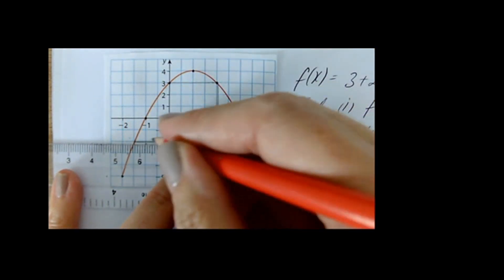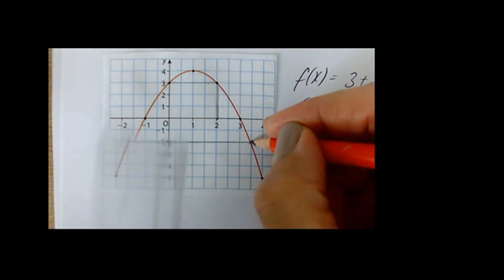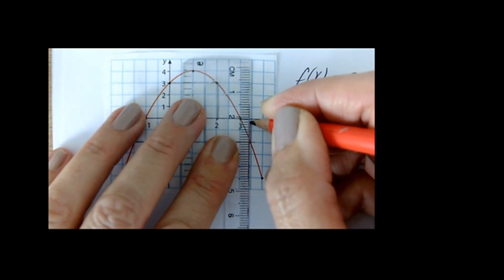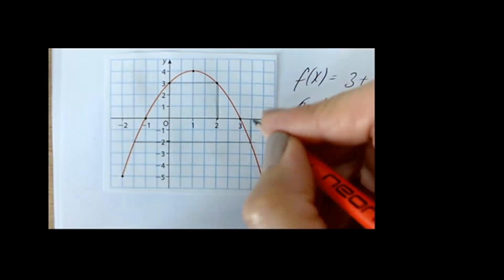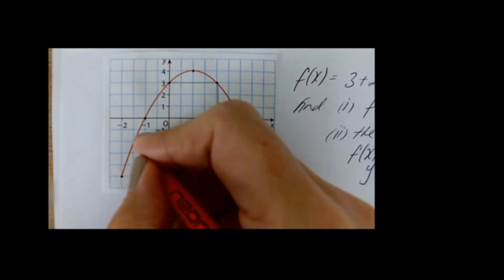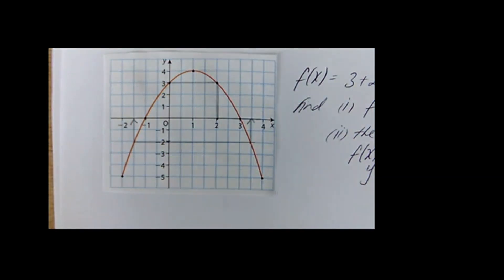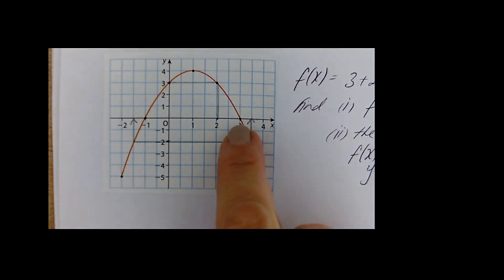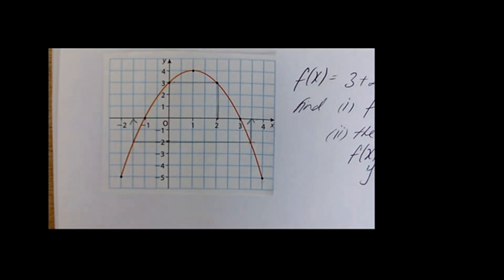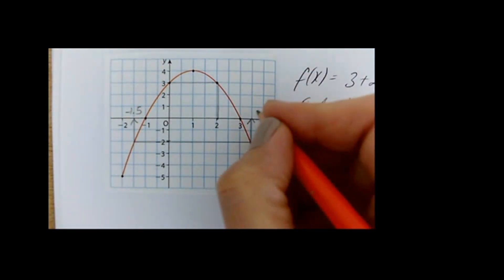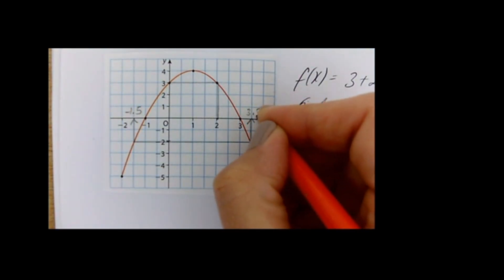Since we went to the y, we're going to read off the x. Just as before, when you went to the x, you read off the y — if you go to the y, you read off the x. So what values have I got? That's right slap in the middle between 3 and 4, so that would be 3.5. And here, right in the middle between minus 1 and 2, is minus 1.5.